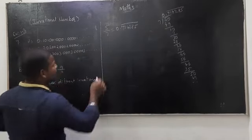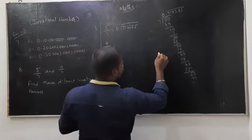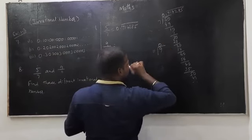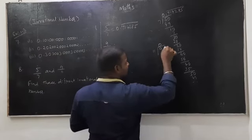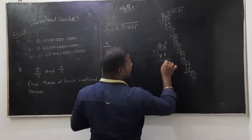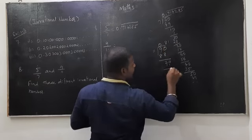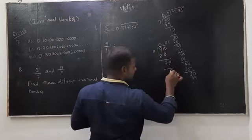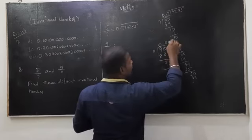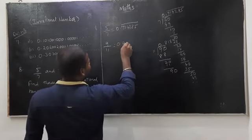Now for 9 divided by 11: 9 is not divisible by 11, so take 90 ÷ 11 = 8 remainder 2; 20 ÷ 11 = 1 remainder 9; then 90 again — it repeats 8 and 1. So 9/11 = 0.81̄ (0.818181...). Now we need to find three irrational numbers between these two decimal values.